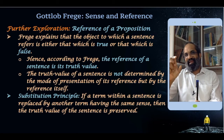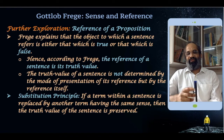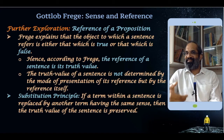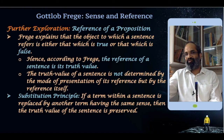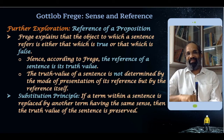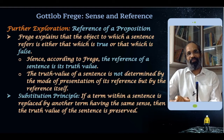The substitution principle claims that in a compound statement, if you substitute one statement with another having the same truth value, the truth value of the whole statement does not alter. Similarly, if a term within a sentence is replaced by another term having the same sense, the truth value is preserved. For example, 'the pen is not having any ink' replaced by 'the pen is empty' — both give the same meaning. The truth value does not alter. If the pen is empty, both are true; if not, both are false.